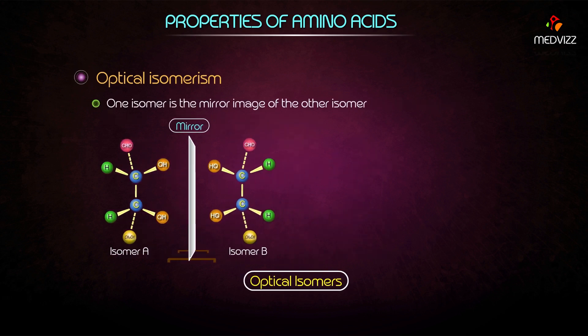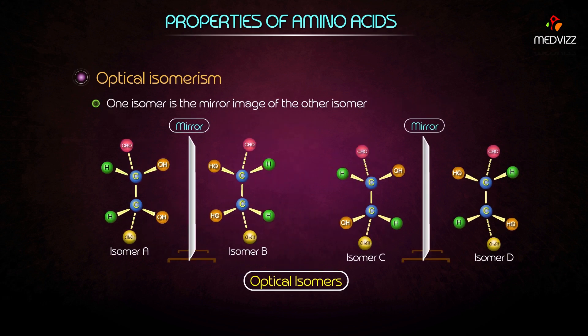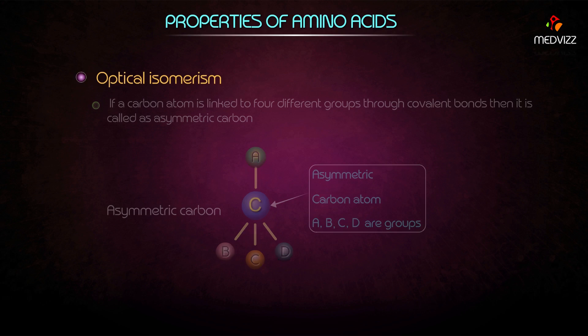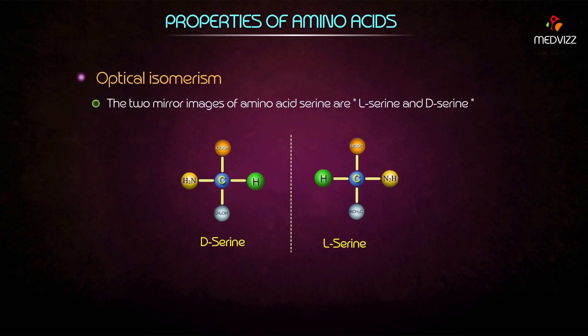One isomer is the mirror image of another. If a carbon atom is linked to four different groups through covalent bonds, it is called an asymmetric carbon. The two mirror images of the amino acid serine are L-serine and D-serine.